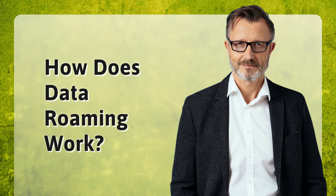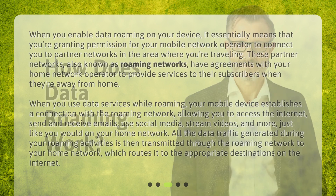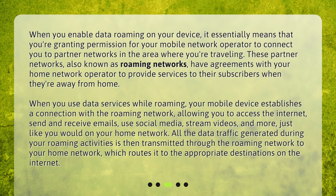How does data roaming work? When you enable data roaming on your device, it essentially means that you're granting permission for your mobile network operator to connect you to partner networks in the area where you're traveling. These partner networks, also known as roaming networks, have agreements with your home network operator to provide services to their subscribers when they're away from home.